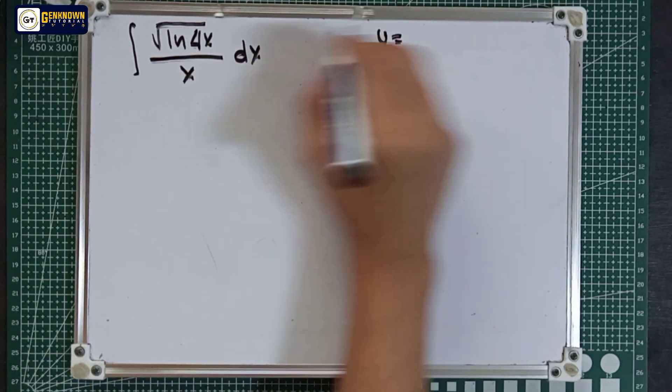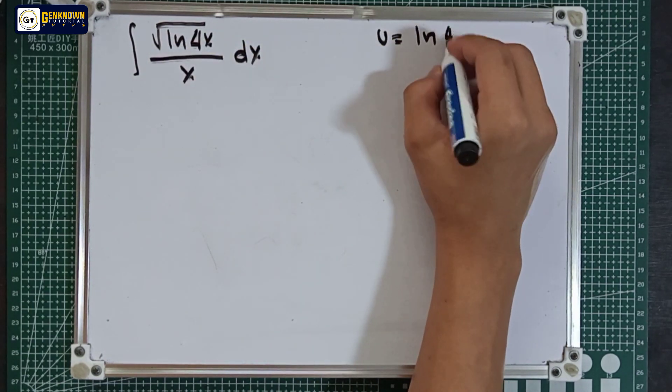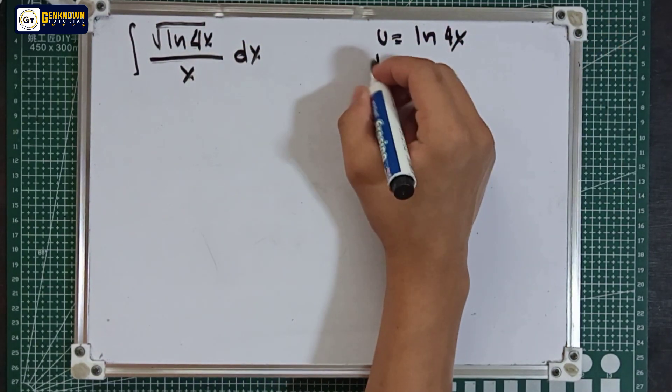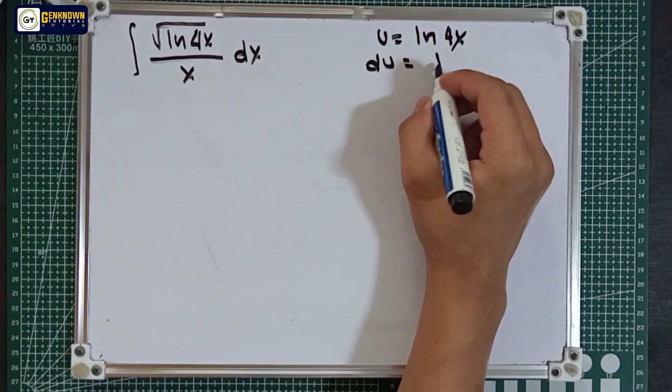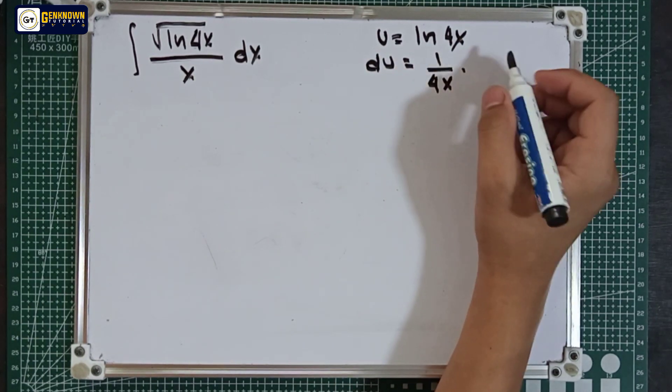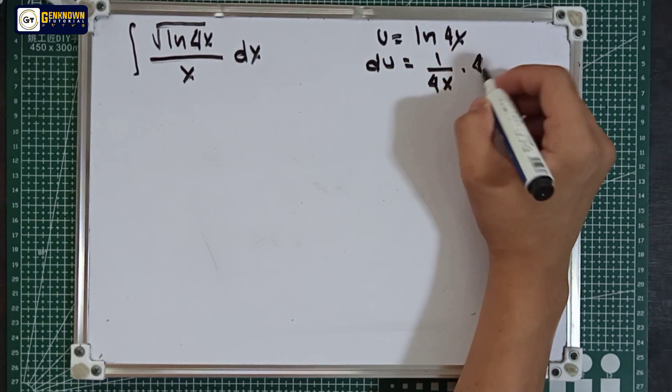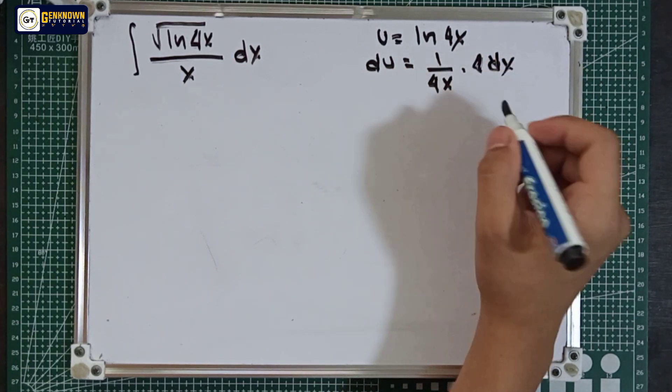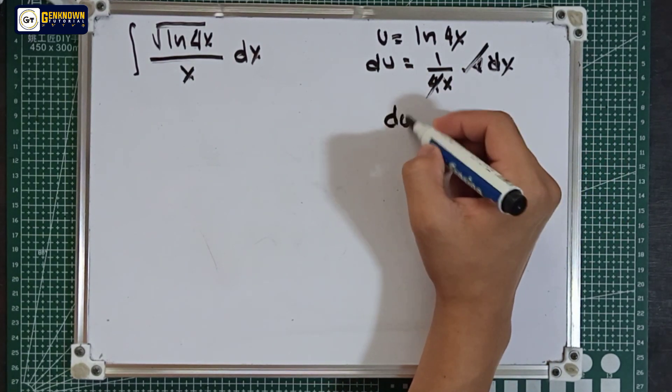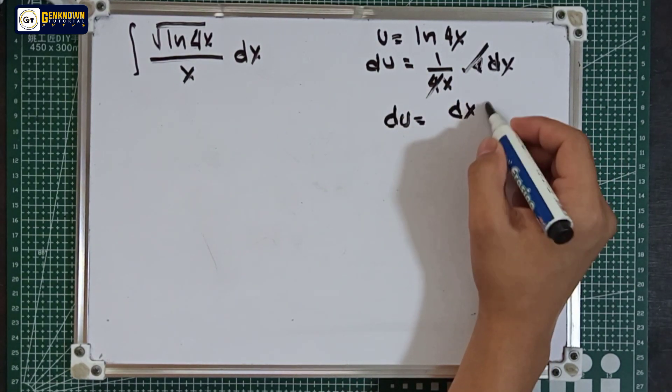Let u equal ln 4x. So deriving it, we have du is equal to 1 over 4x multiplied by the derivative of 4x, which is 4dx. So 4 over 4 is equal to 1, therefore du is equal to dx over x.